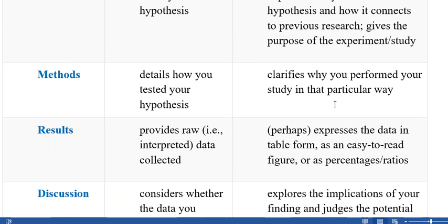Methods: details how you tested your hypothesis. Methods means methods of research, methods of designing—what type of tools and technology you are going to apply. That is called research methodology. It clarifies why you performed your study in that particular way. You tell the limitations and scope of your project.